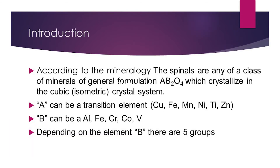According to mineralogy, spinels are any of a class of minerals with the general formula AB₂O₄, which crystallize in the cubic crystal system. So if you find a mineral with a chemical composition of AB₂O₄ that belongs to the cubic crystal system, that mineral can be called a spinel. The A can be a transition element — copper, iron, manganese, nickel, titanium — while B can be aluminium, iron, or chromium.